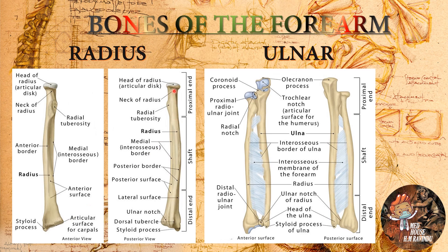In the posterior view of the radius, you can see the head, neck, radial tuberosity, medial border, posterior border, posterior surface, lateral surface, ulnar notch, dorsal tubercle, and styloid process.